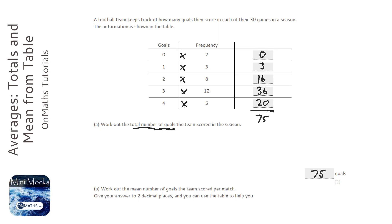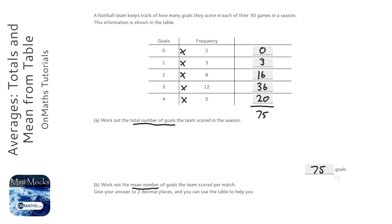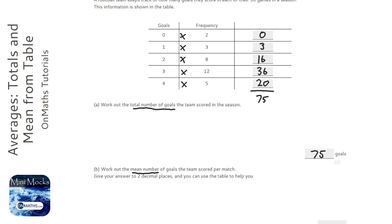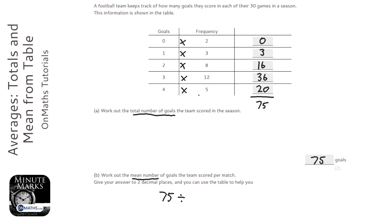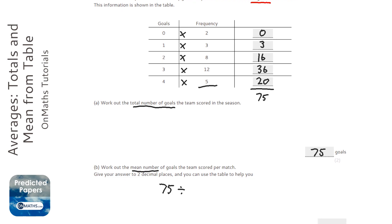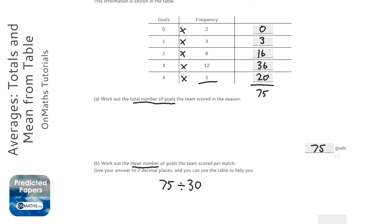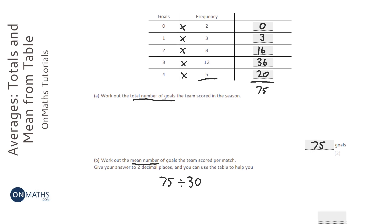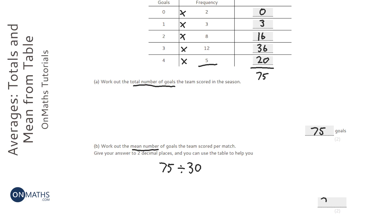The next question asks us for the mean. The mean is all the numbers added up — which we've already done: 75 — divided by the total amount of numbers. We could add up this column but the question tells us there are 30 games, so they add up to 30. So we're doing 75 divided by 30, and it wants it to two decimal places, but this gives 2.5, so we can leave it as 2.50.